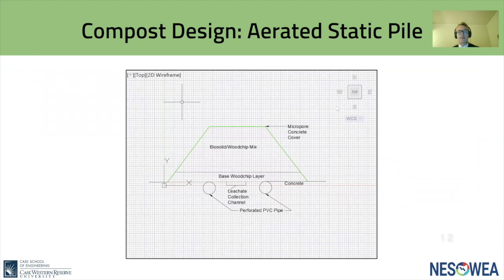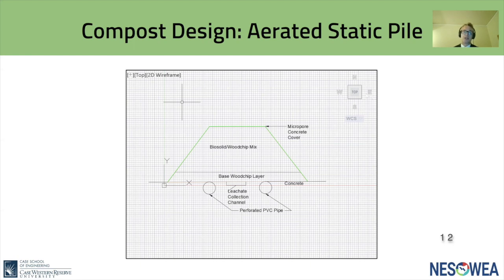We have chosen the aerated static pile composting method. This method involves the placement of a mixture of organic matter and bulking agent onto a system of perforated pipes which forcefully aerates the concoction. Aeration is key, as the process relies on micro-organisms breaking down the organic matter while consuming BOD. We also considered the windrow method, which similarly requires compost placed in long piles — known as windrows — but where aeration occurs through mechanical turning rather than forcefully through pipes. Aerated static pile was preferred due to reduced operation requirements and superior temperature controls, especially in Ohio, which experiences all four seasons.